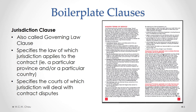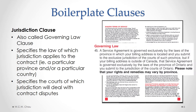A jurisdiction clause or a governing law clause specifies the law of which jurisdiction applies to the contract — specifically, the laws of which province or the laws of which country. This clause also specifies the courts of which jurisdiction will deal with contract disputes. What it essentially says is that the governing law and the relevant courts are those of the province in which your billing address is located. So if you're a Rogers customer and you live in Ontario, then Ontario law will apply, and any lawsuit would happen in an Ontario court.